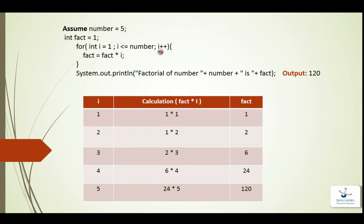And when after this loop, when i will become 6, this condition will not be true, so the control will come out of this loop and factorial of number, and number is 5, is 120 will be printed.